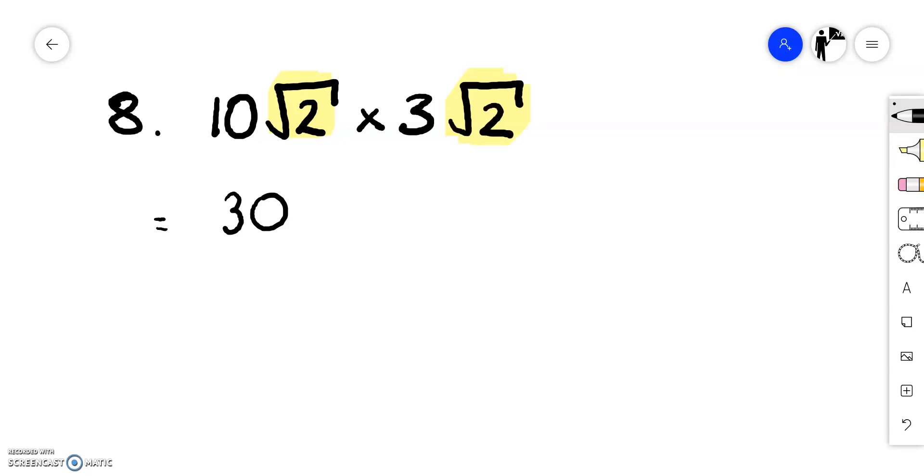Remember this is one of these shortcut questions or shortcut surds because when we do root 2 times root 2 we just get 2 out. Because if we did that at the side, root 2 times root 2 is root 4 which is 2. So we can just use that shortcut. So our answer to this problem is just 60. No surds there.